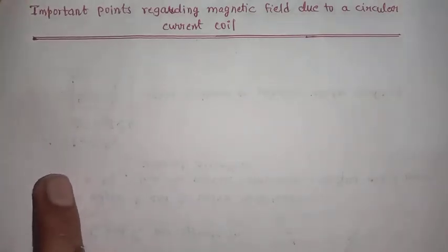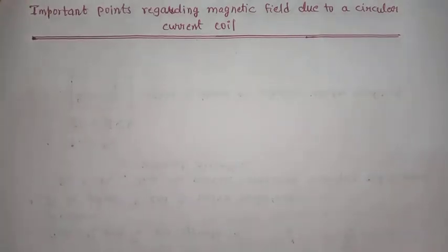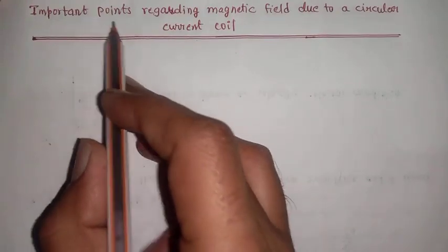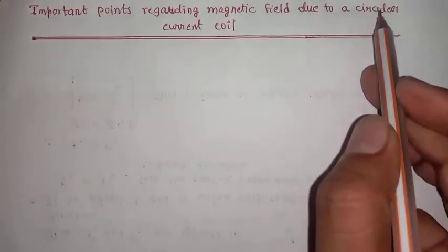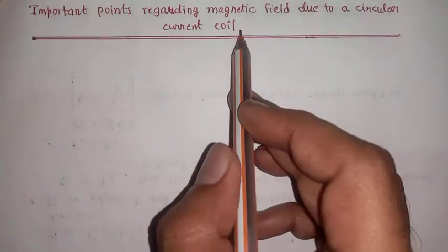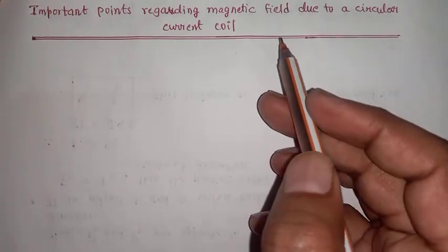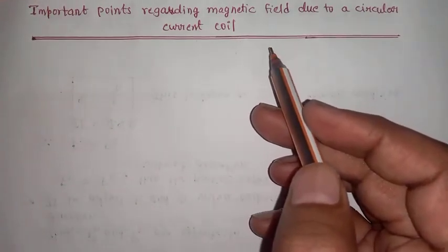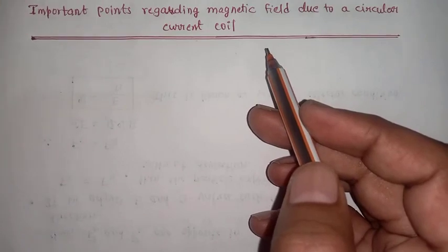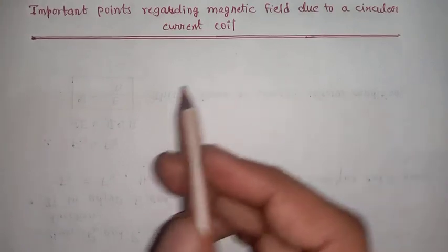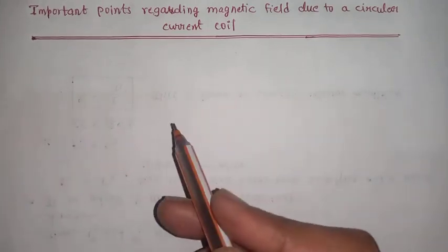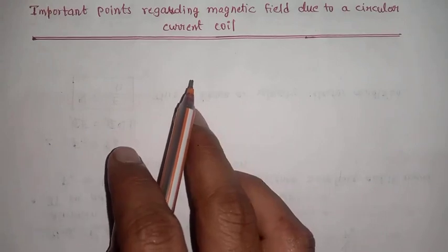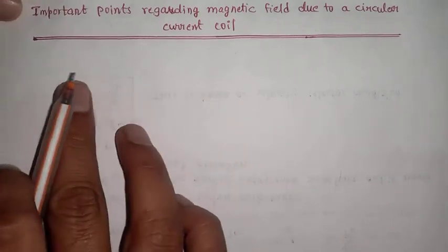Namaste. In this video, we will cover some of the important points regarding the magnetic field due to a circular current-carrying coil. This is for competitive exam purposes. I will give the important formulas and key points — three derivation models — so you can note them down briefly and quickly.